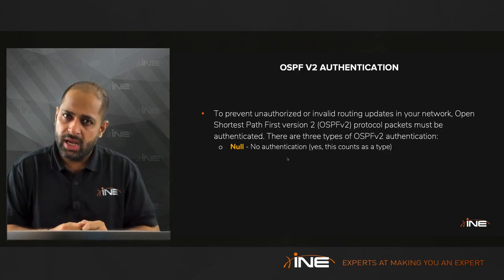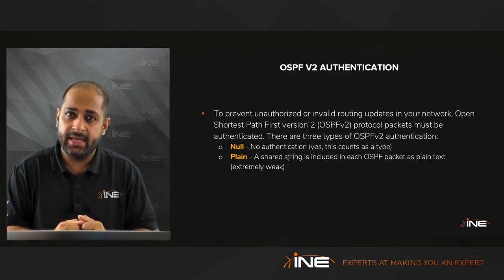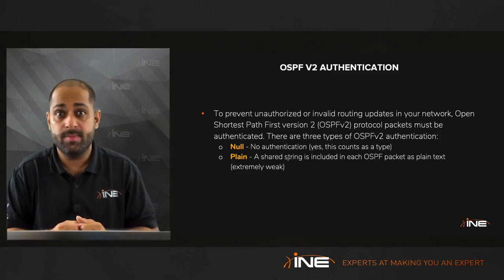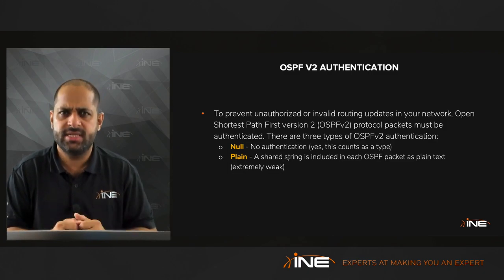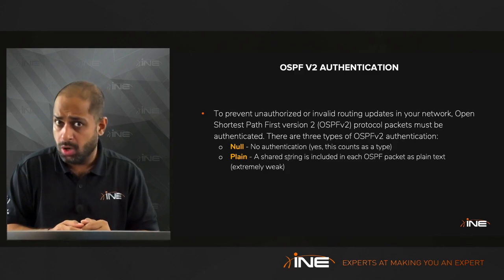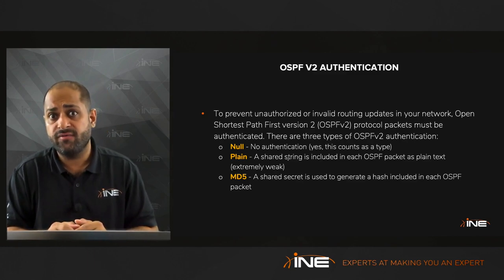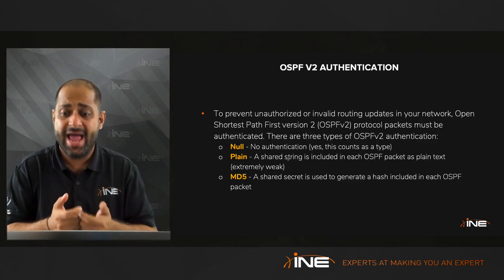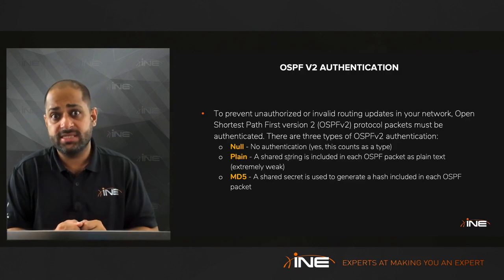The second type is clear text. OSPF supports clear text, and the difference is that the password would be visible if you do a 'debug IP OSPF hellos' or 'debug IP OSPF adjacency'. It's in clear format so it's less secure. Clear text authentication is type 1. Lastly, MD5 is more secure — a shared secret creates a hash included in the OSPF packet. MD5 is type 2.